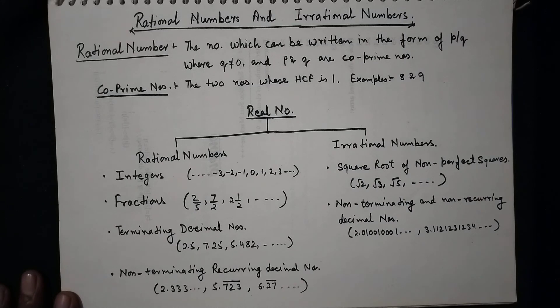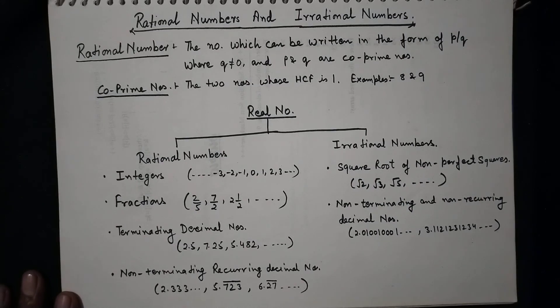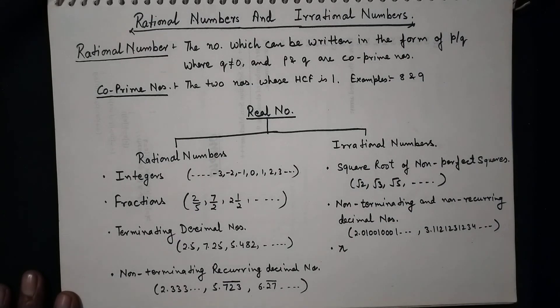And we take one more example, that is pi. Pi is also considered as an irrational number. Rather, the values of pi we know as 22 upon 7 or 3.14, that will be a rational number, but the actual value of pi is an irrational number. That's all in this video.